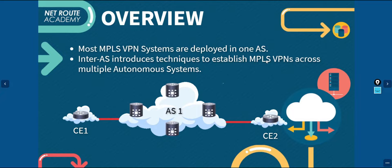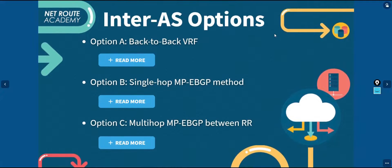We have two types of service provider design: CSC and inter-AS. In this topic, we will only cover inter-AS. There are three options that can be used to establish inter-AS: Option A — back-to-back VRF; Option B — single-hop MP-EBGP method; and Option C — multi-hop MP-EBGP between route reflectors. We will discuss every option and the characteristics of these different approaches.